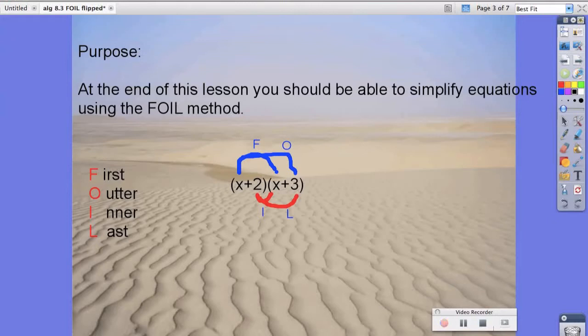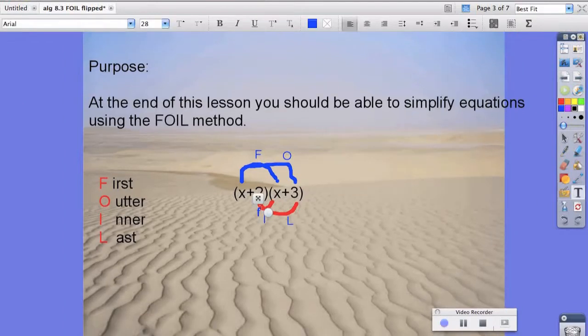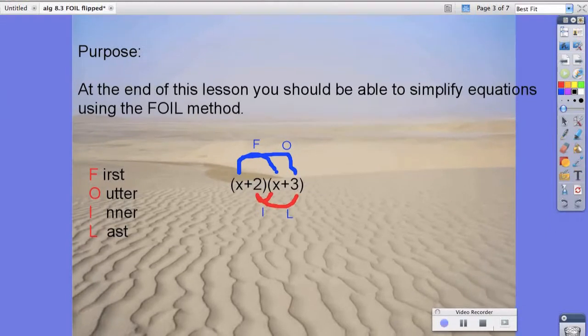So if you look at it, if you start with one set of binomials and you distribute it to every piece on the other binomial, like we did here, the blue lines that start at our x go to the other x and the 3. And then our inner and last start from the 2, go to the inner x, and to the last 3.